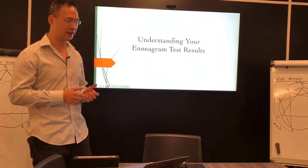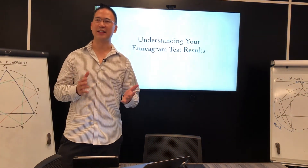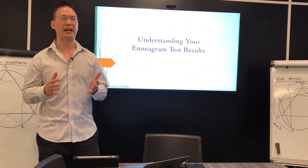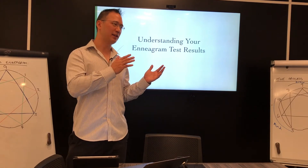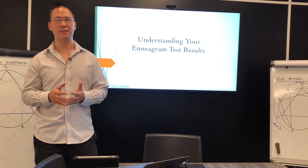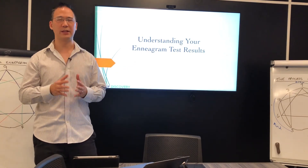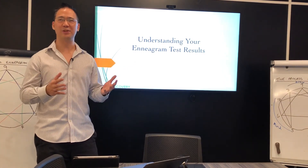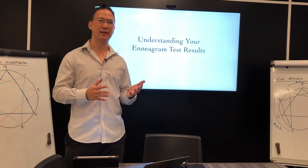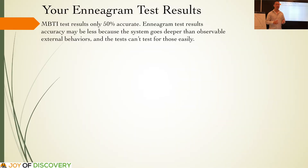We're going to briefly run through what your Enneagram test results are and what it means, and then we're going to go through the nine different types. It's okay if you haven't done the Enneagram test. As we go through the nine different types, you'll be able to see pictorially what those types are and hopefully identify your own type from the descriptions. I'm going to talk a little bit about MBTI because MBTI is more common and more widely used than the Enneagram.